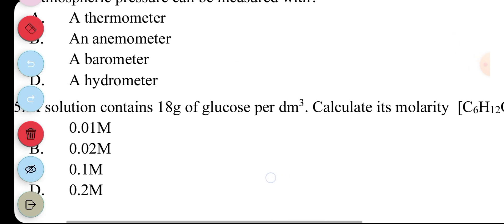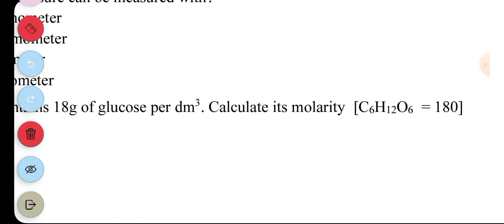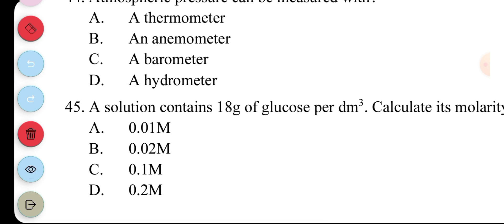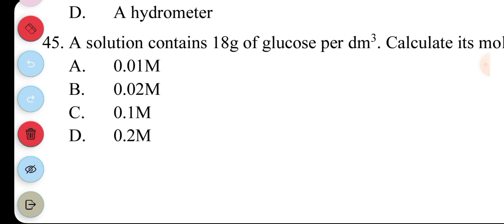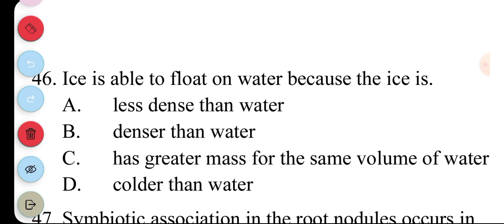Question 45. A solution contains 18 grams of glucose per dm cube. Calculate its molarity. Now, molarity is mol per dm cube. And to calculate the molarity, this is the formula. Molar concentration equals mass over volume times molar mass. So, the mass is 18 over volume is 1, then molar mass is 180. So, basically it's 18 over 180, which is going to give us 0.1 molar. A. Ice is able to float on water because ice is... A. Less dense than water. B. Denser than water. C. Has greater mass for the same volume of water. D. Colder than water. The answer to question 46 is... A. Less dense than water.